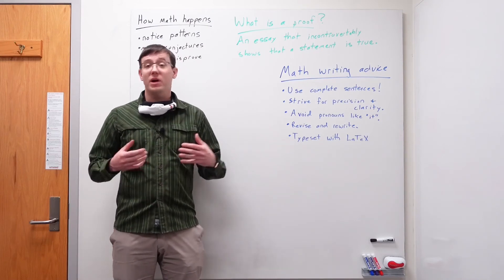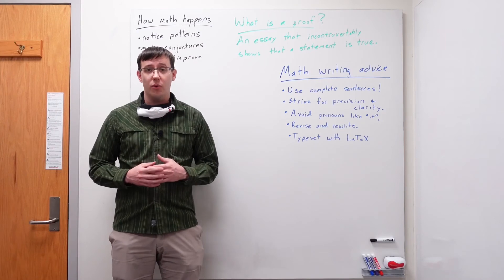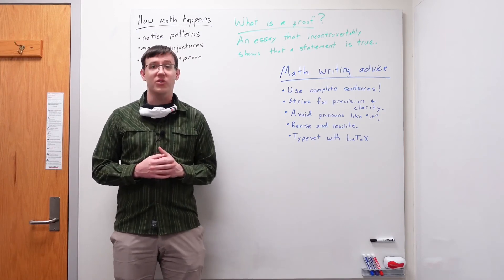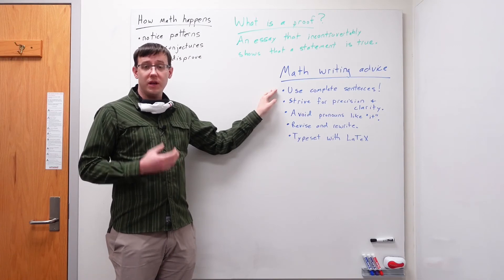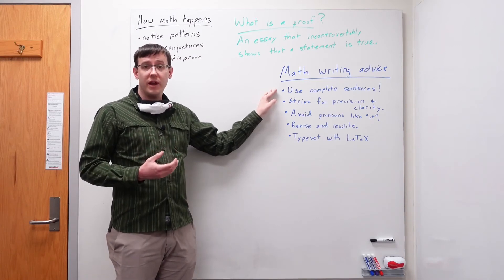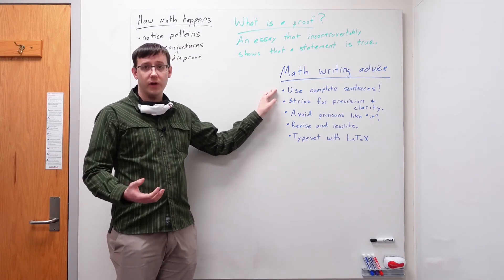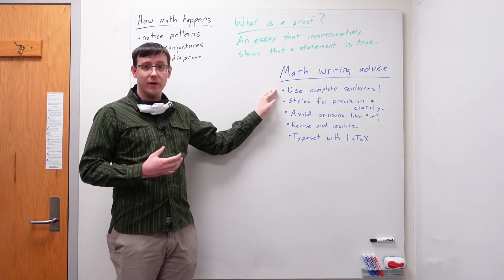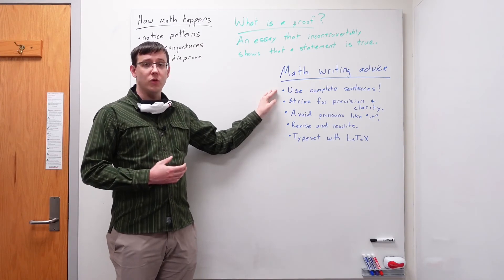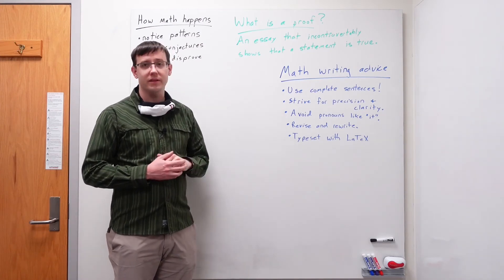We'll be writing lots of proofs this semester, so we'll come back to this many times. But I want to start with some general advice for writing proofs in a math or computer science class. In the example of the card trick, it would have been easy to skip lots of steps and assume that our reader was following along. But to ensure that our writing is clear and precise, it helps to slow down and write in complete sentences.